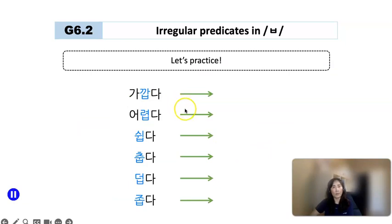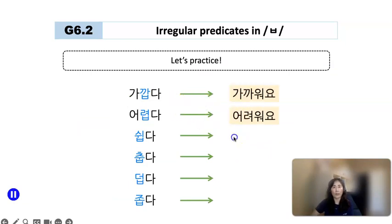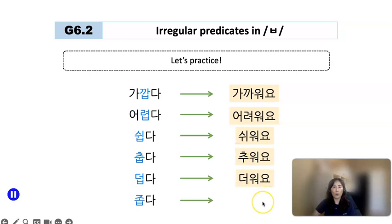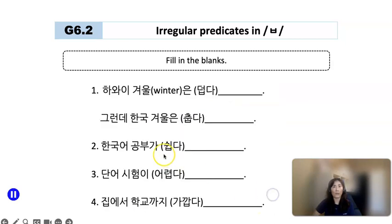Let's practice a little bit more: 가깝다 → 가까워요; 어렵다 → 어려워요; 쉽다 → 쉬워요; 춥다 → 추워요; 덥다 → 더워요. And 좁다 — this is a regular verb — so 좁아요.